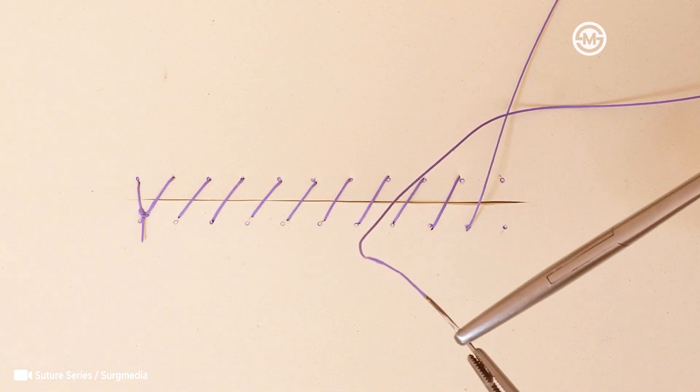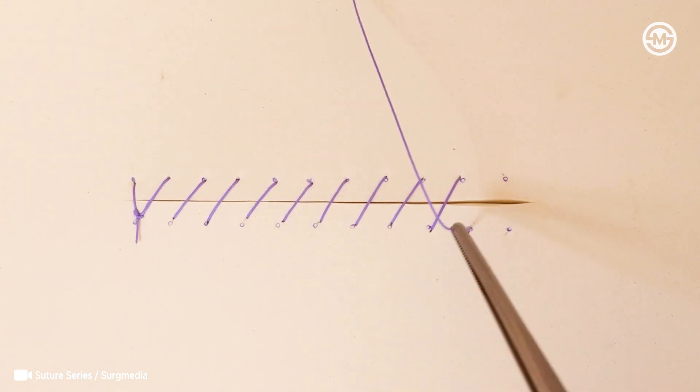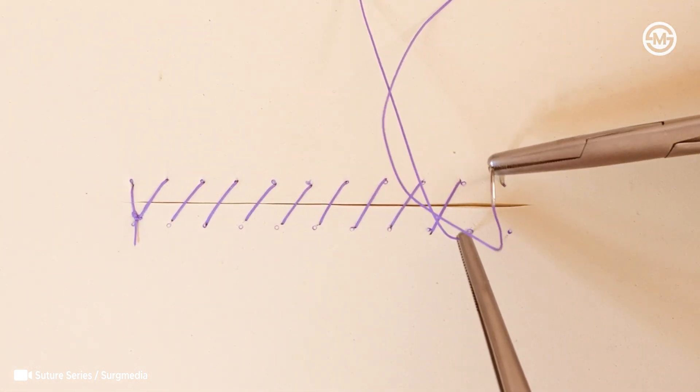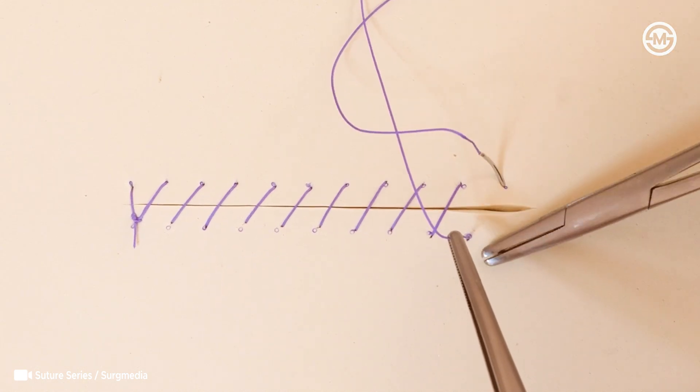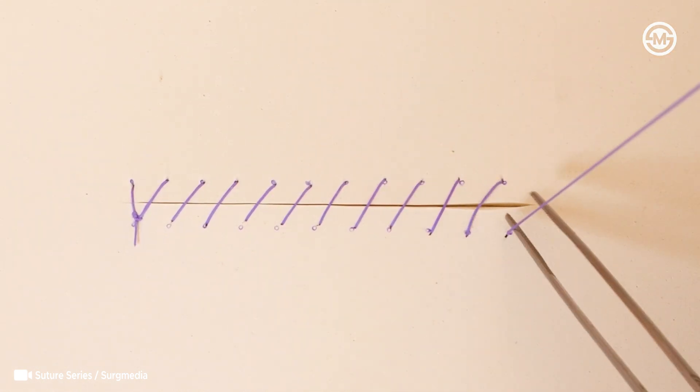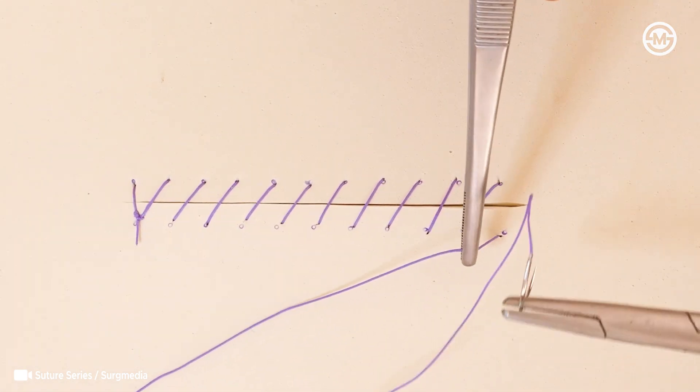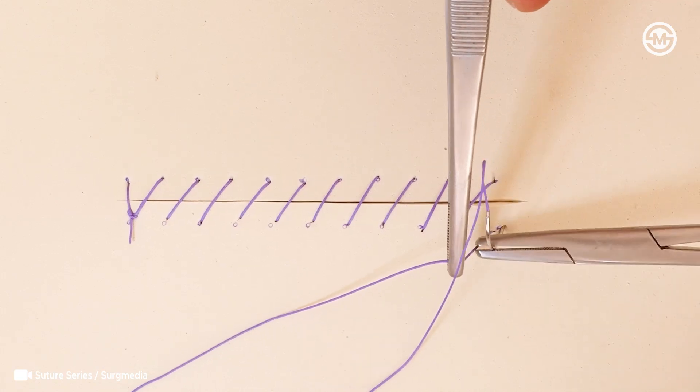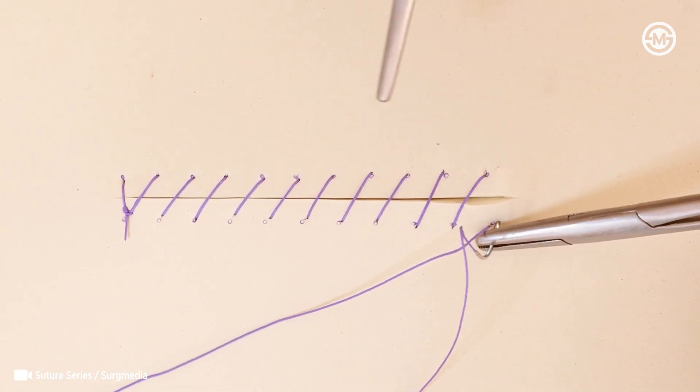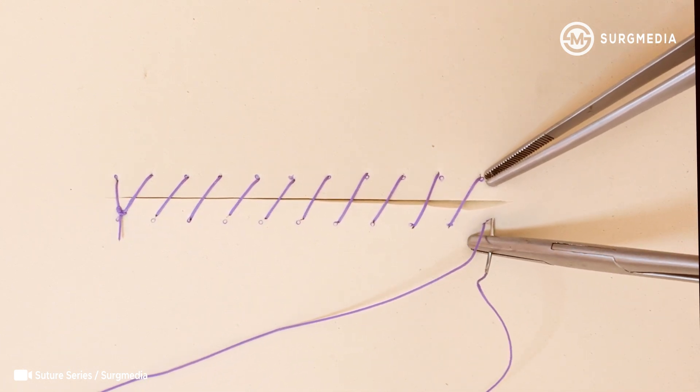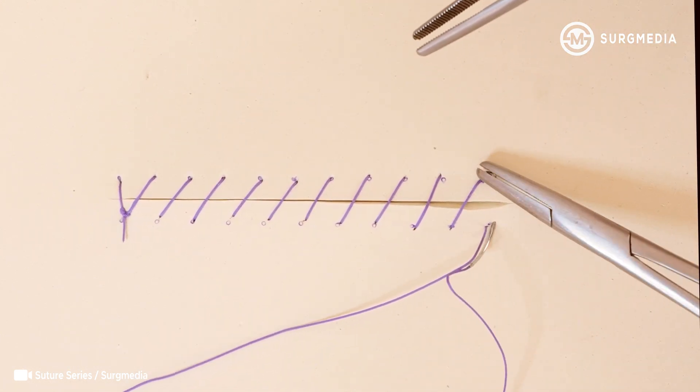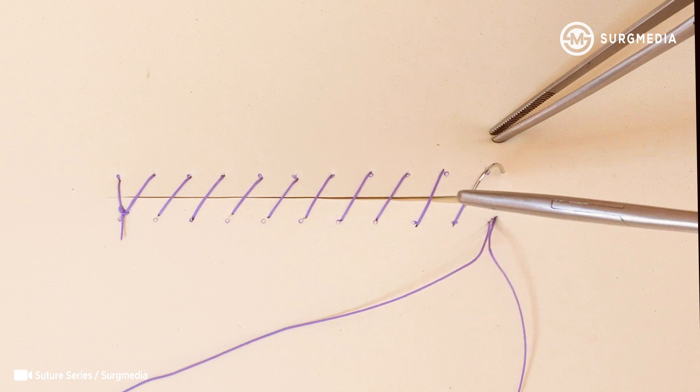Choosing the right suture material also matters, and it depends on the tissue and whether you need the suture to be absorbable or not. For deeper tissues, we usually go with absorbable sutures like Vicryl or Monocryl. For skin, non-absorbable options like proline or nylon work best. Monofilament sutures resist infection better, while polyfilament ones provide more knot security.